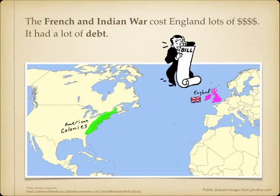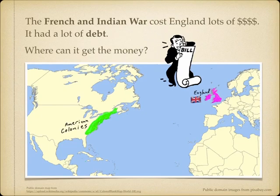The French and Indian War cost England lots of money. It had a lot of debt. Debt means that you owe for money that you borrowed. They spent a lot of money paying for the army which had to fight far across the ocean. Where could England get this money from?